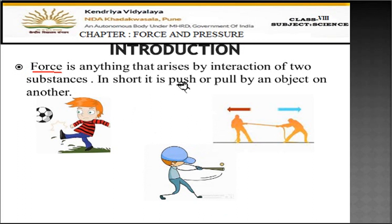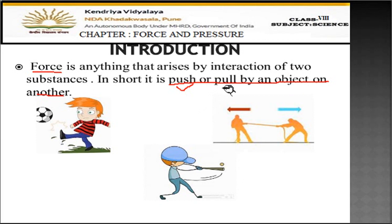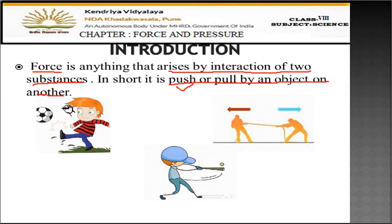Force is a push or pull by an object on another object. Push means whenever any object is forced away from the body. If anything is taken towards the body, it is called pull. Force is the interaction of two substances — one who is applying the force and the other on which the force is applied.